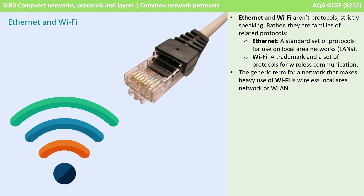Firstly, Ethernet and Wi-Fi. Now technically these aren't protocols strictly speaking — rather they're families of related protocols — but at GCSE we can be simpler. Ethernet is a standard set of protocols for use on local area networks. Wi-Fi is a trademark and a set of protocols for wireless communication. The generic term for a network that makes heavy use of Wi-Fi is a wireless local area network, or WLAN.